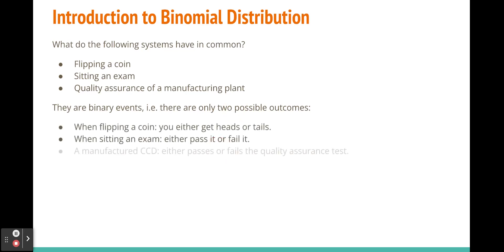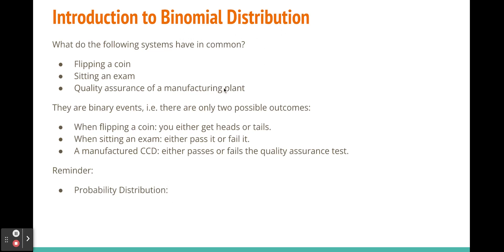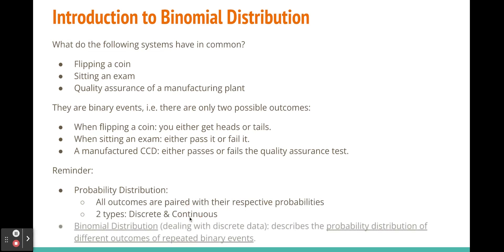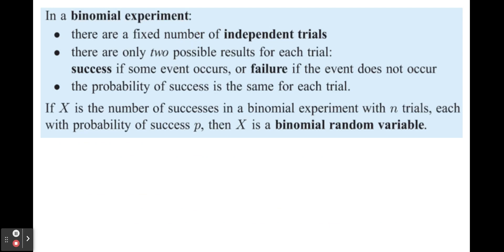When we look at the binomial distribution, we're evaluating binary events where there are only two possible outcomes. We need to remember what a probability distribution is, because the binomial distribution is one of many probability distributions, where all outcomes are paired with their probabilities. We have discrete and continuous types. Binomial distribution looks at the probability distribution of different outcomes of repeated binary events. We need binary events with two possible outcomes — often called a success and a failure.